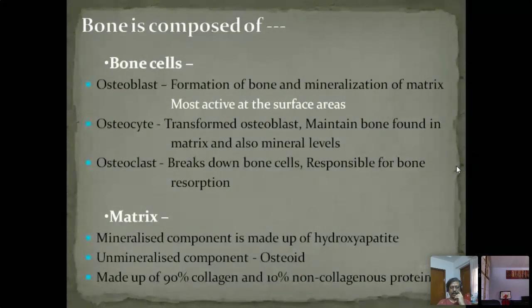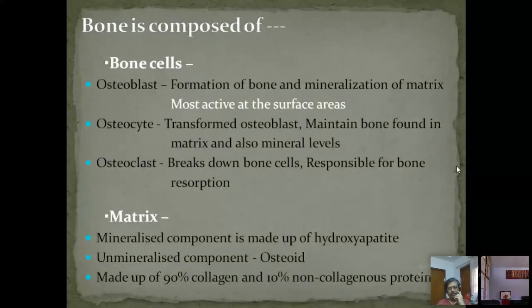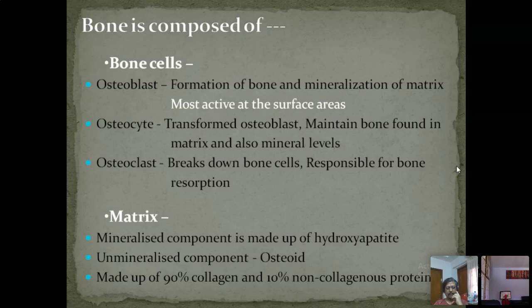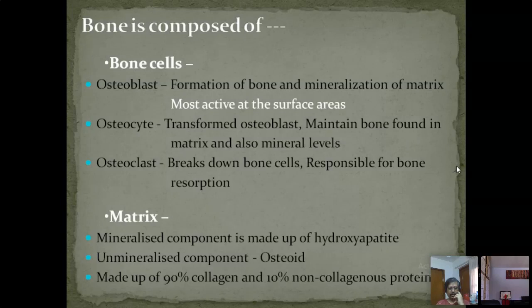Initially, we will discuss very basics about how bone is formed. Bone looks like a very static organ in the body — in fact the most static — but it is one of the most dynamic organs of the body. There is a continuous process of bone formation and bone resorption. In this process, a few cells take part: namely osteoblasts, osteocytes, and osteoclasts.